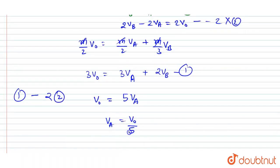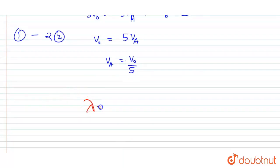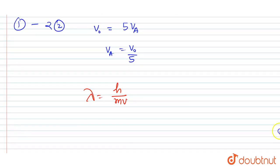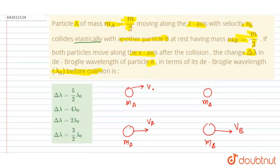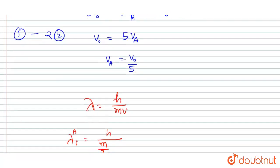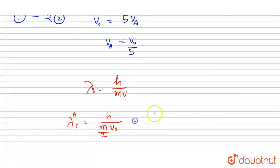So understand de Broglie wavelength. De Broglie wavelength is Planck's constant by mv. So if I talk about the de Broglie wavelength of A initially, it was h/(mₐv₀). The mass of particle A is m/2, given in the question, and initially it was moving with velocity v₀. So this was the initial de Broglie wavelength.